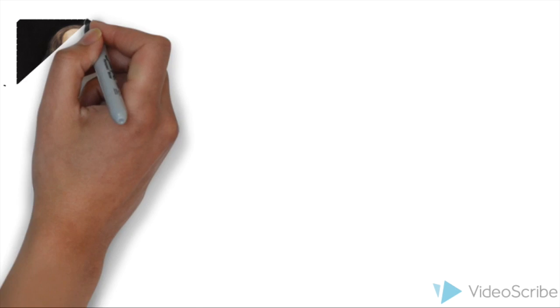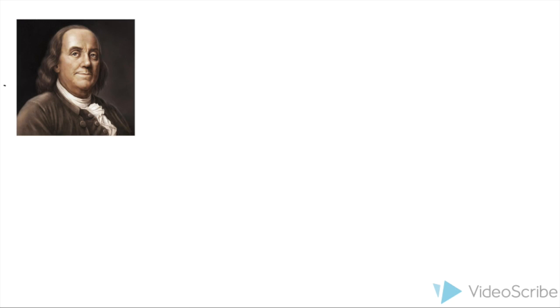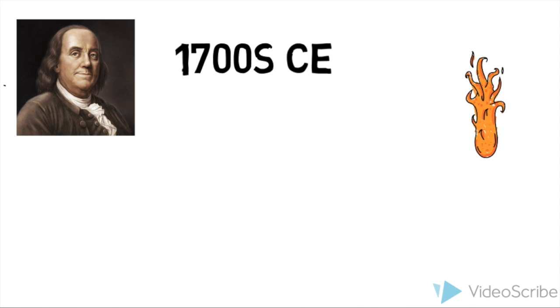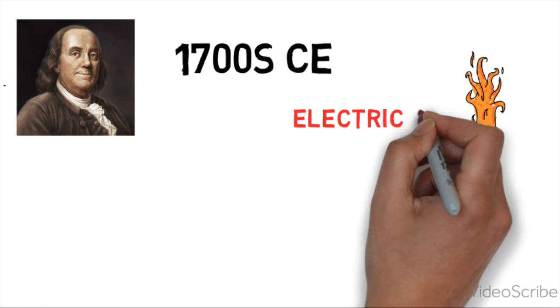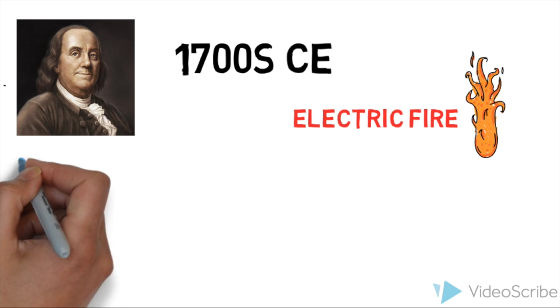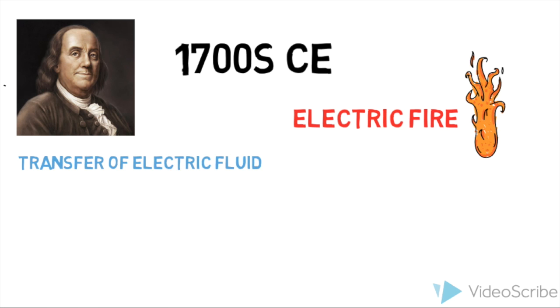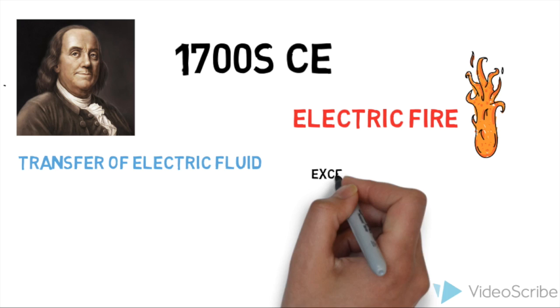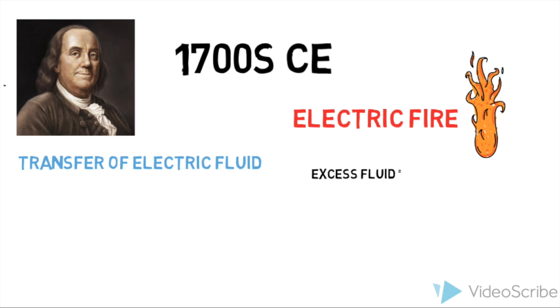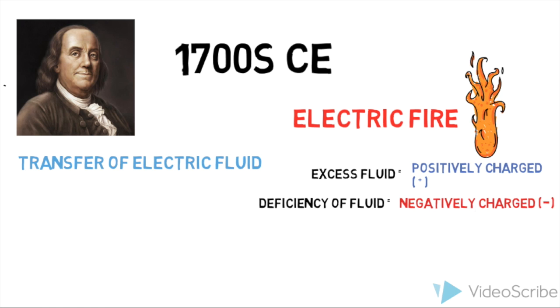People would not fully understand this idea until Benjamin Franklin makes his appearance in the 1700s. Benjamin Franklin called this phenomenon electric fire. You obtain this electric fire by the transfer of electric fluid. He also introduced the idea of positive and negative charges. If you have too much of the fire, you are positively charged, and if you have a deficiency of the electrical fire, you are negatively charged.